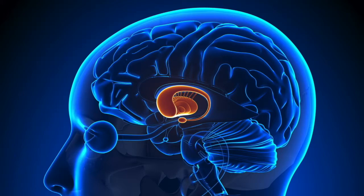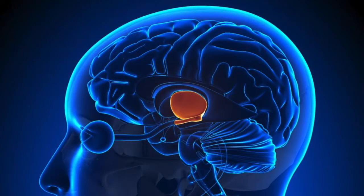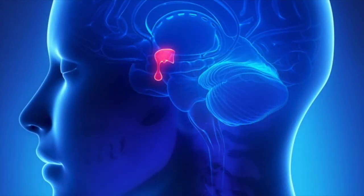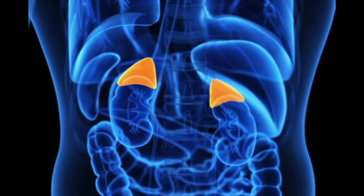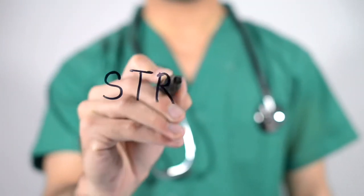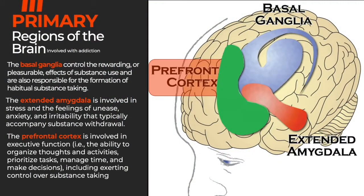The extended amygdala also interacts with the hypothalamus, an area of the brain that controls the activity of multiple hormone-producing glands, such as the pituitary gland at the base of the brain and the adrenal glands at the top of each kidney. These glands control reactions to stress and regulate many other bodily processes. The prefrontal cortex is located at the very front of the brain, over the eyes, and is responsible for complex cognitive processes described as executive function — the ability to organize thoughts and activities, prioritize tasks, manage time, make decisions, and regulate one's actions, emotions, and impulses.